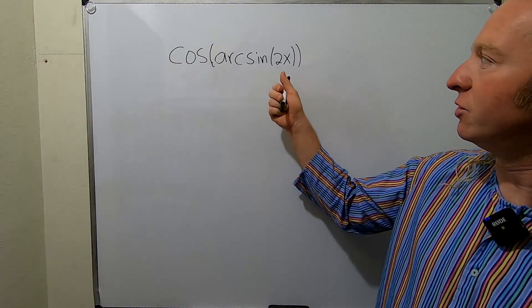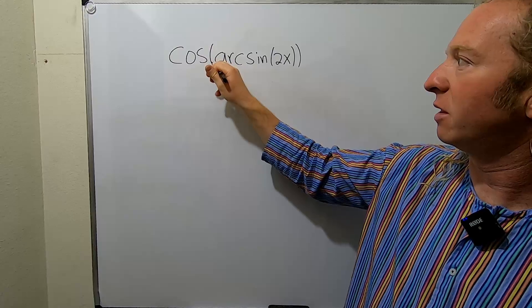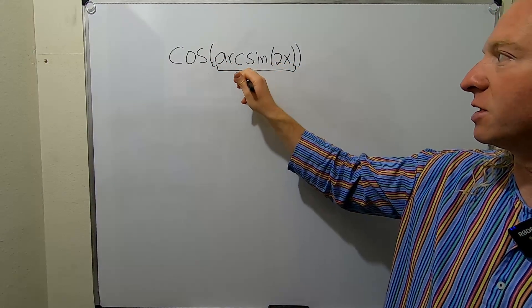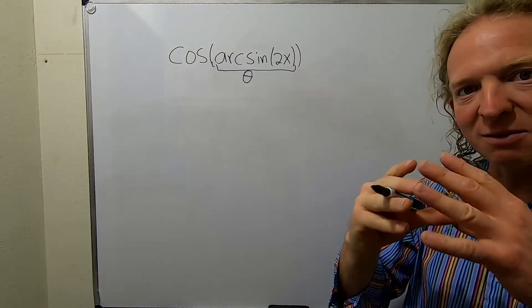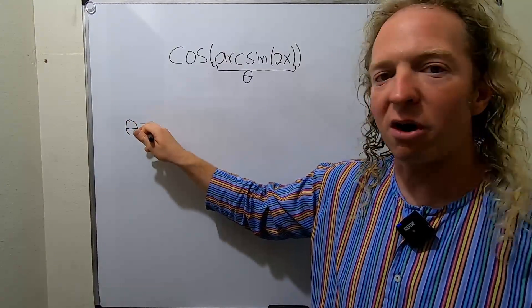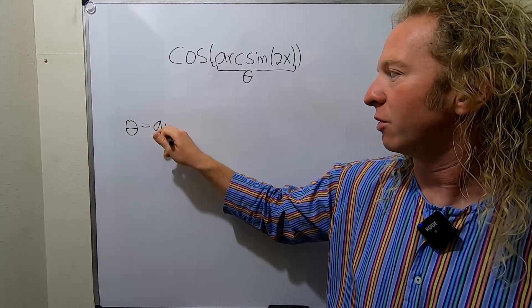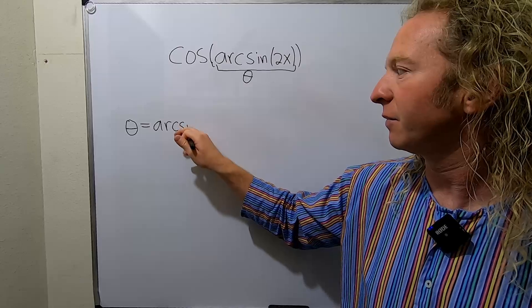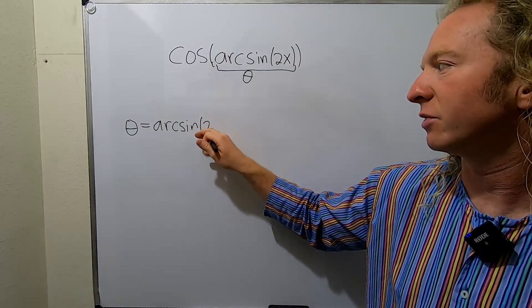So the very first step is to call this piece here theta. So always as a first step, you want to let that inside piece be theta. So theta is equal to the arc sine of 2x. Good stuff.